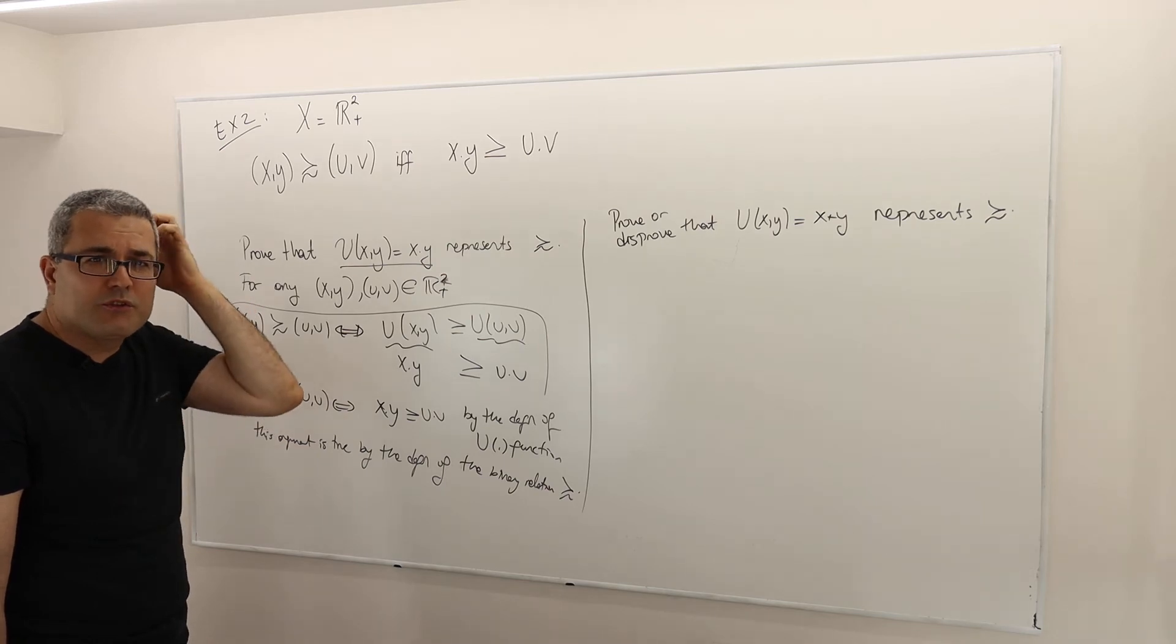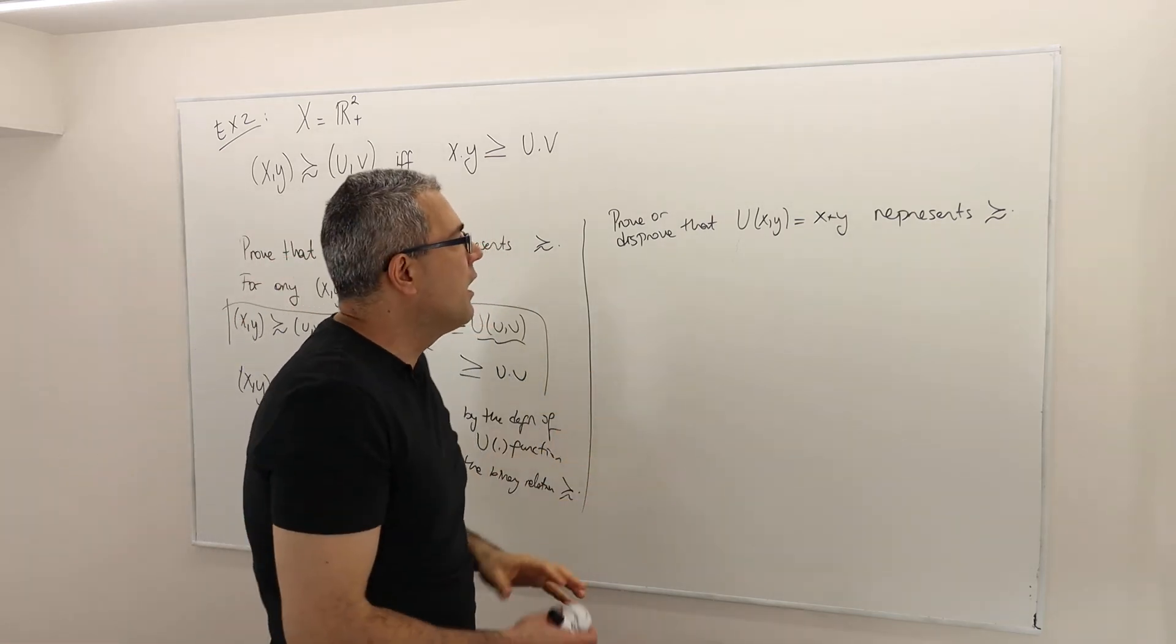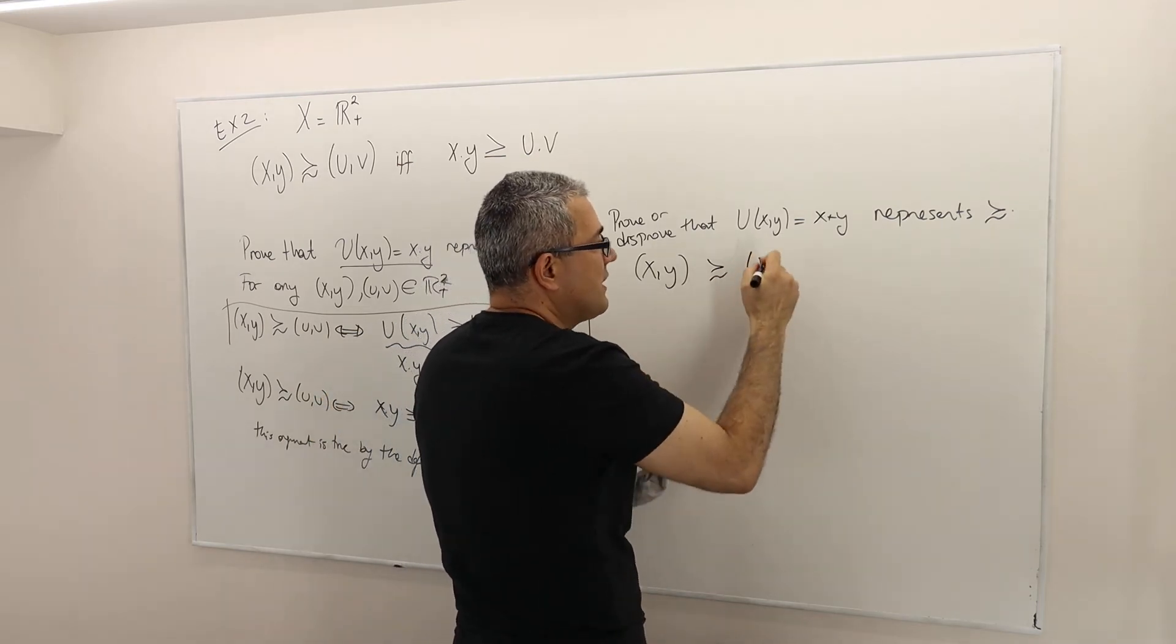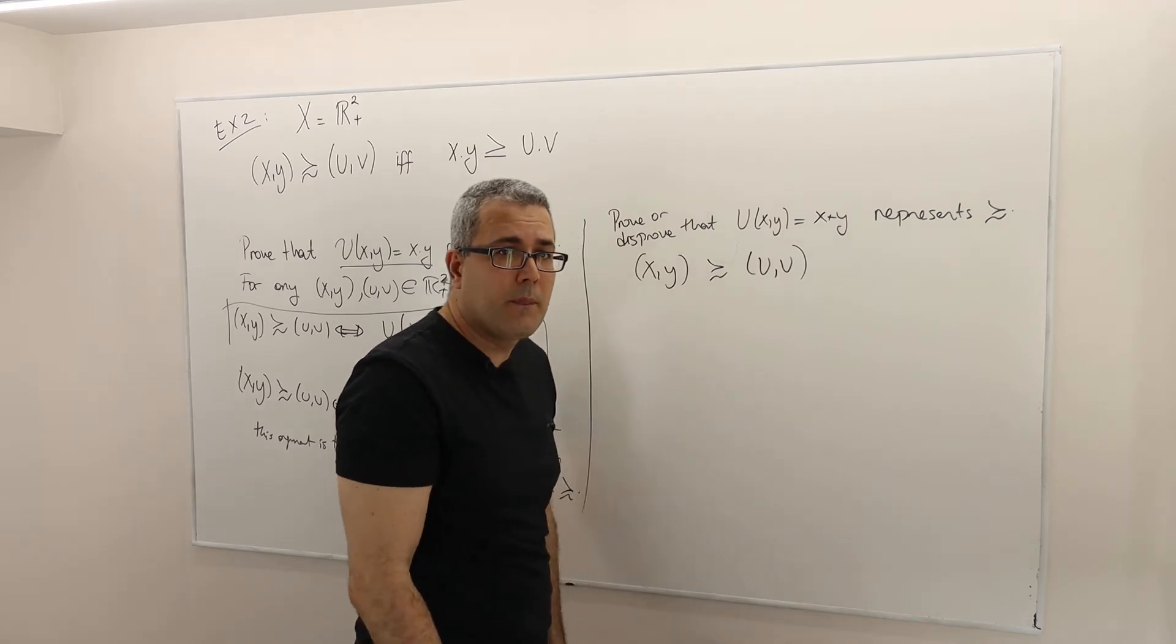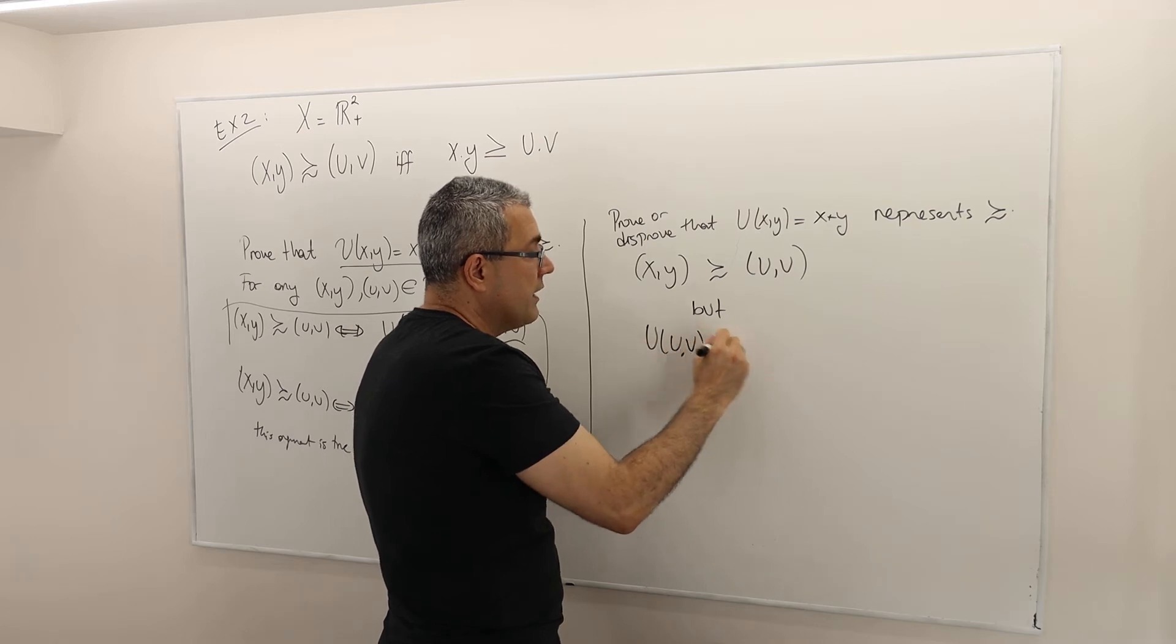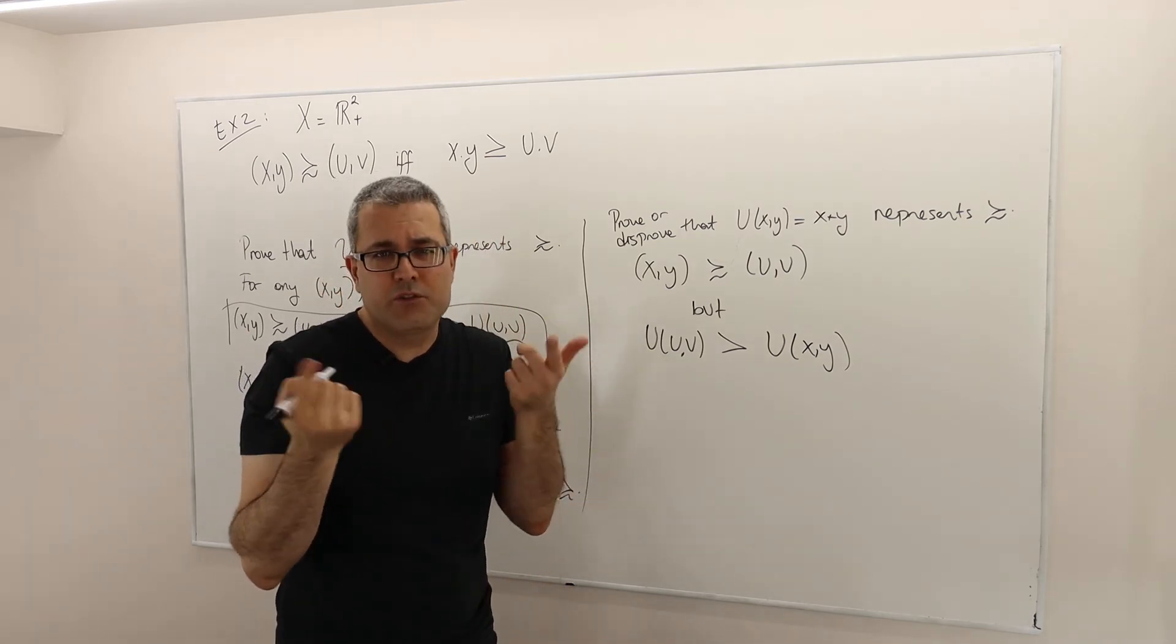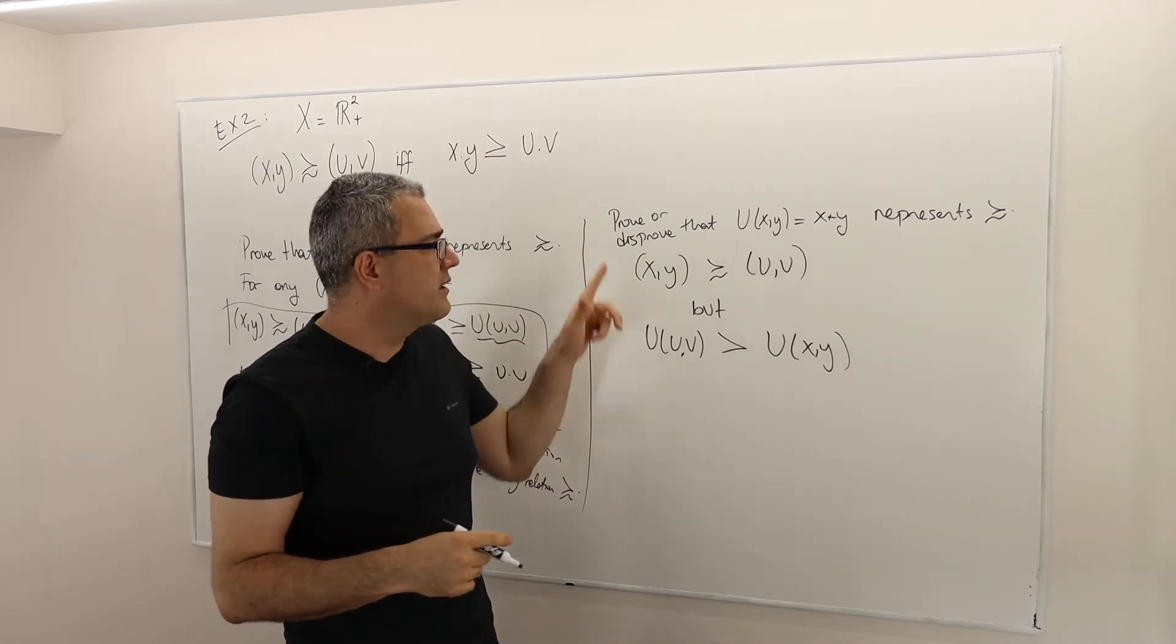Maybe I should start thinking of counter-examples. What does that mean? That means find some XY and UV where XY is at least as good as UV, but utility of UV is strictly greater than utility of XY. That's important: it should be strictly higher. If it is, for example, equal, that's not a contradiction.